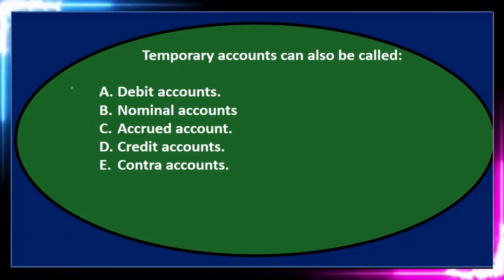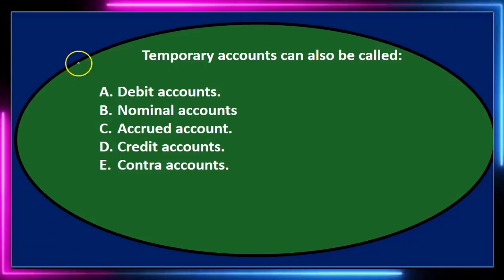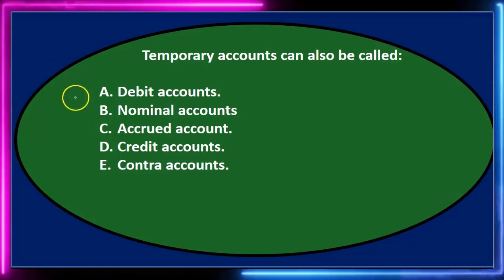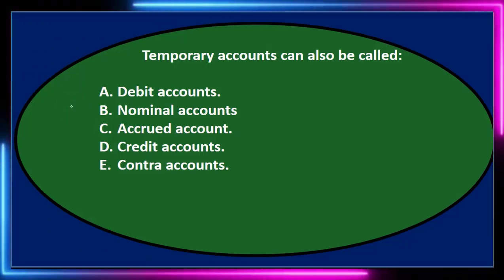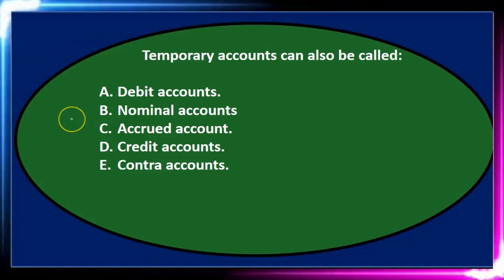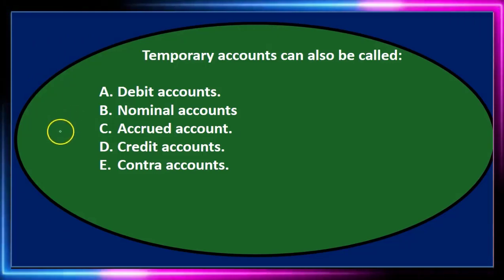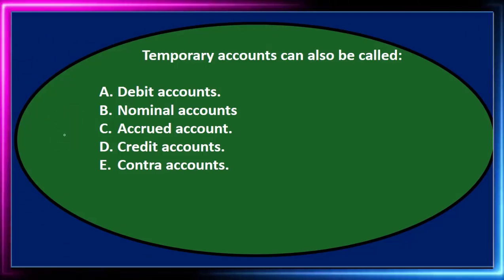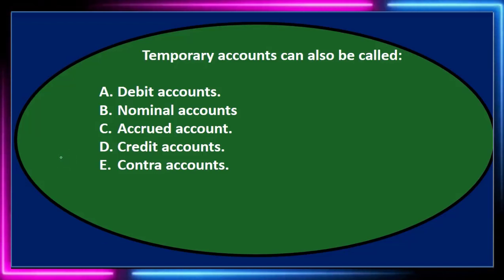First question: temporary accounts can also be called — A, debit accounts; B, nominal accounts; C, accrued accounts; D, credit accounts; or E, contra accounts.